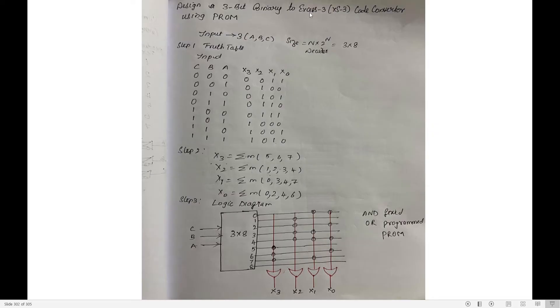Let us see the inputs. What are my inputs? ABC. What is my output? XS3 is my output — 3-bit binary to XS3. Since there are 3 inputs, I have combinations from 000 to 111.